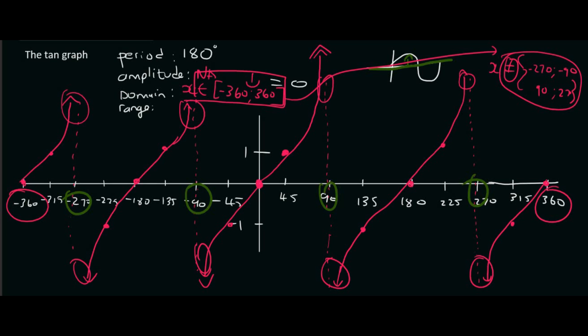Then the range, well check this out. The lowest value of this graph, it just keeps going. And then the highest value of this graph just keeps going. So you could say that Y is an element going from minus infinity all the way to positive infinity. And remember, with infinity, you don't use a square bracket, you always use a round bracket.